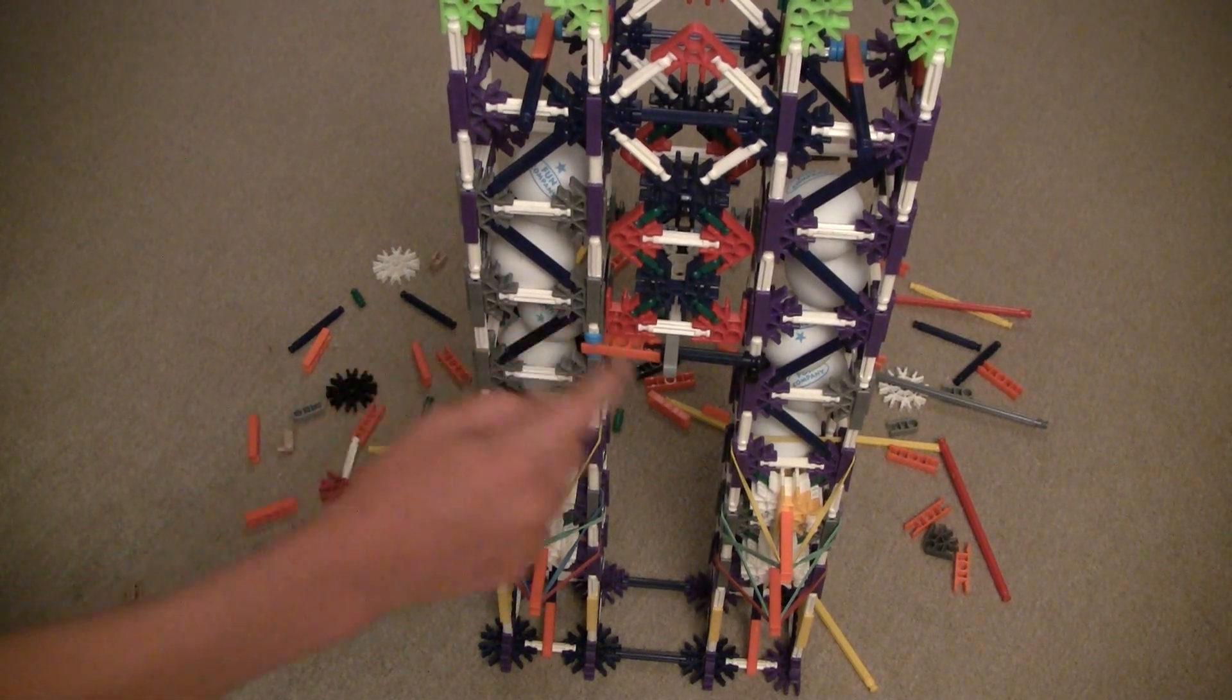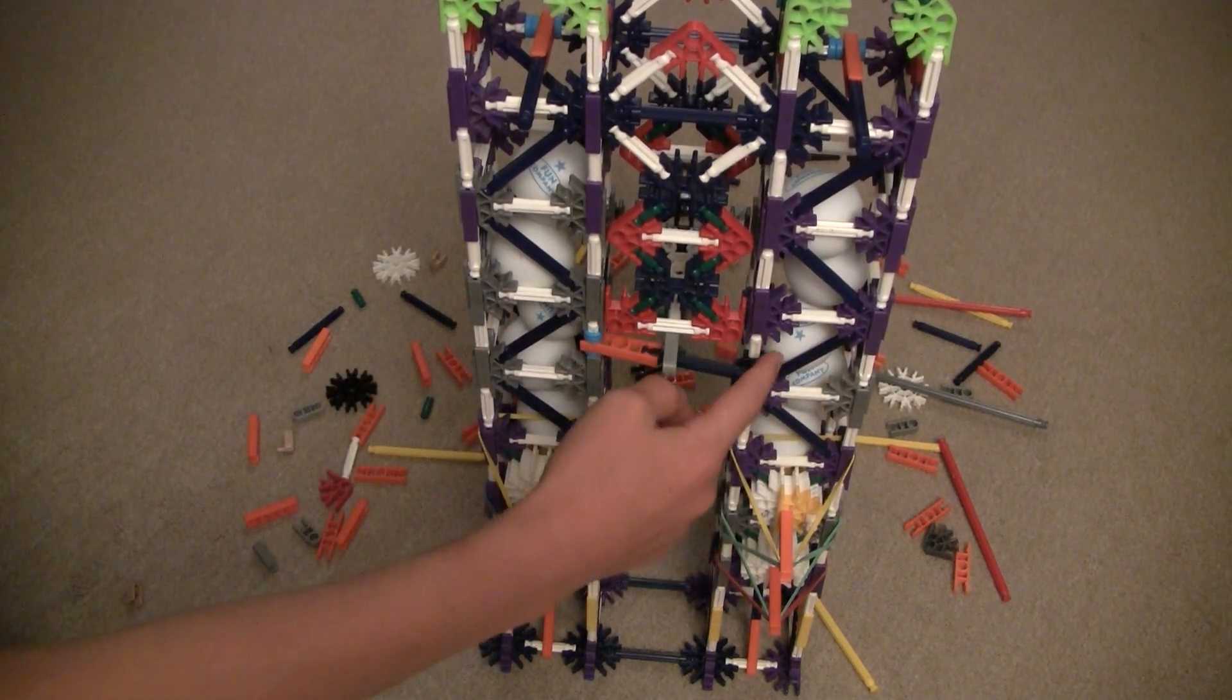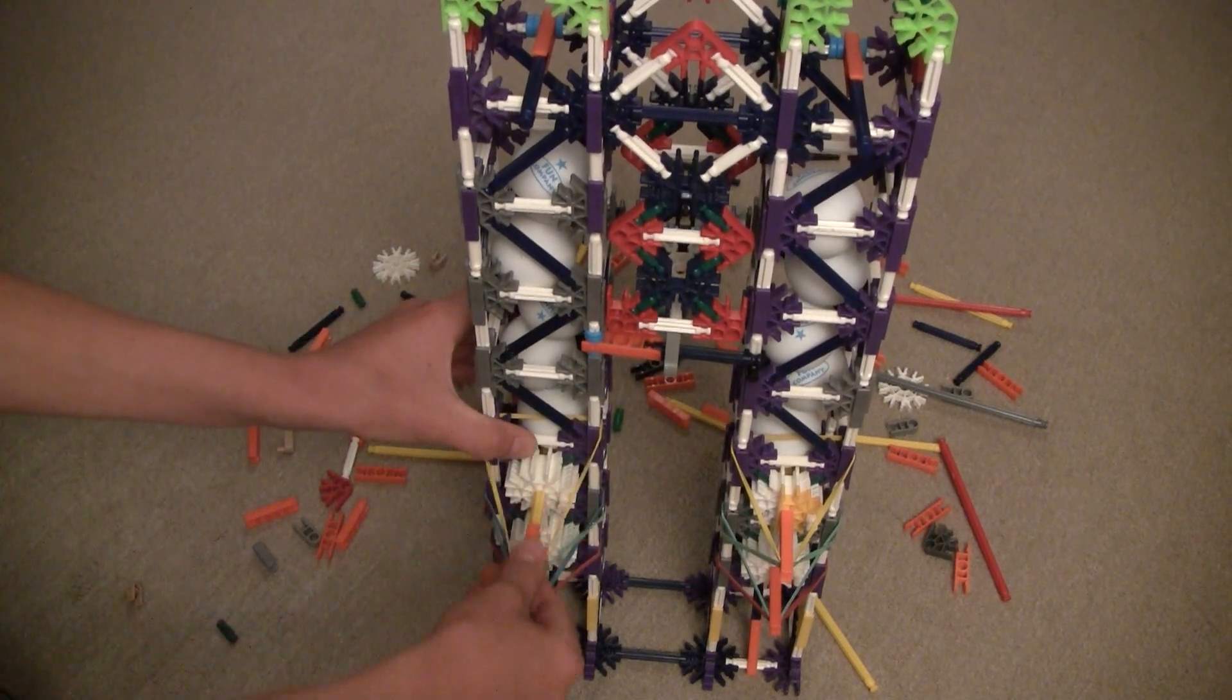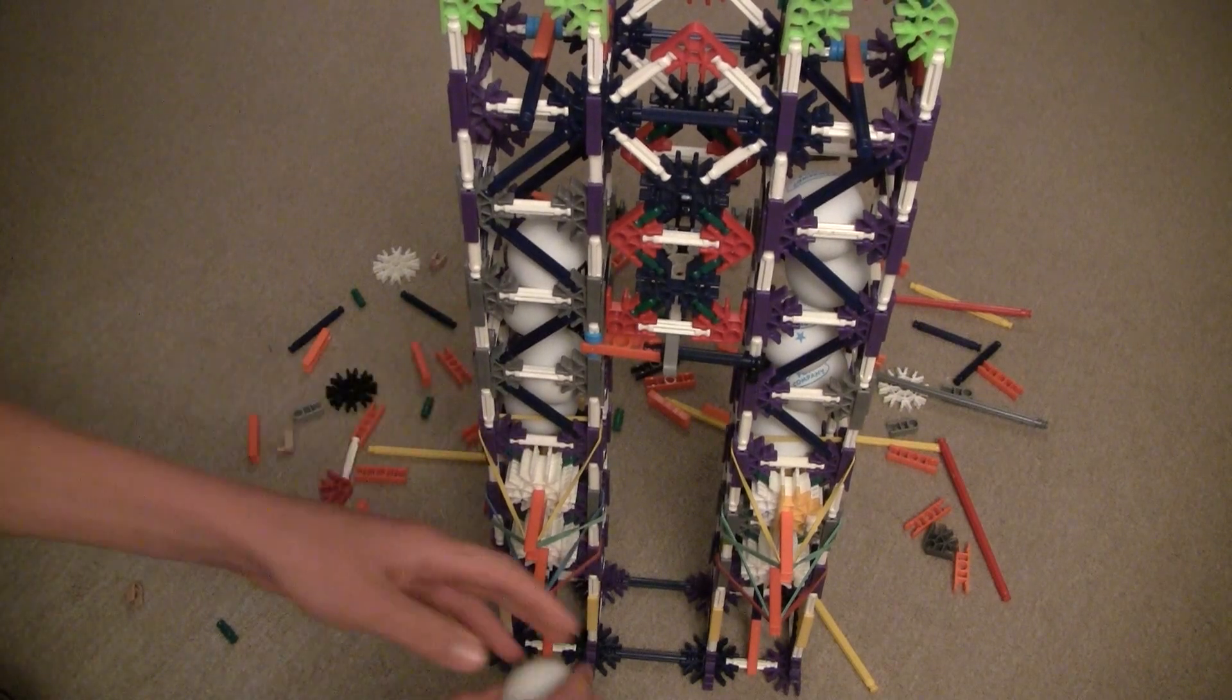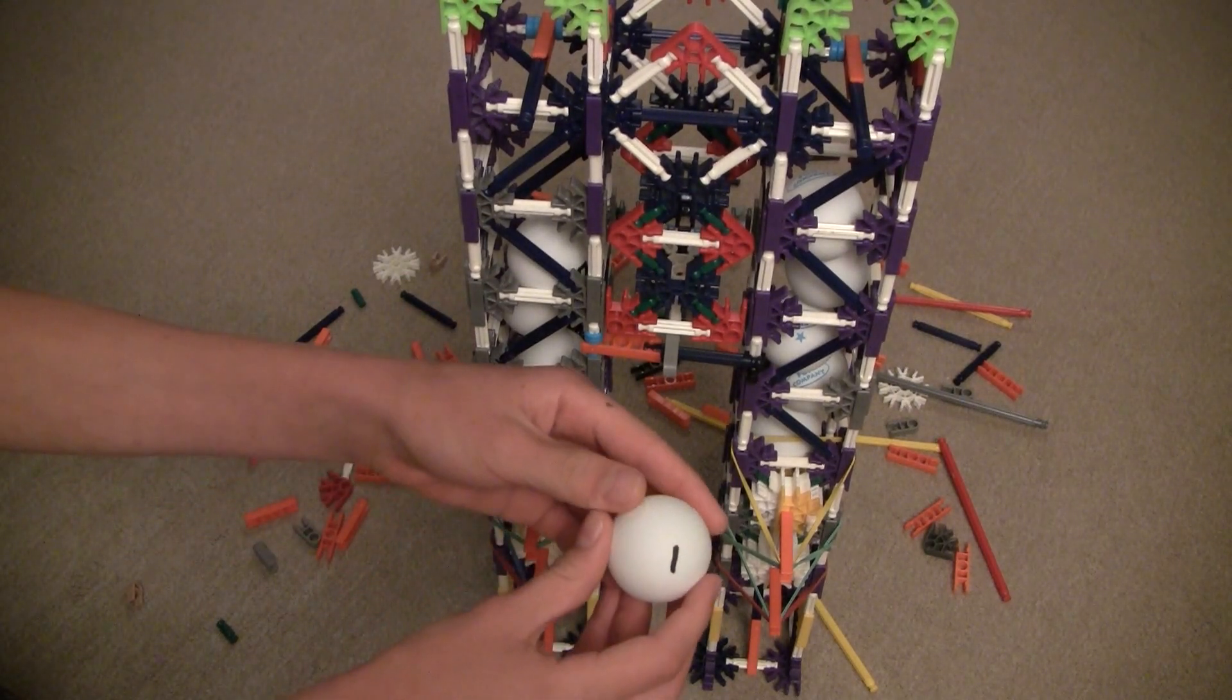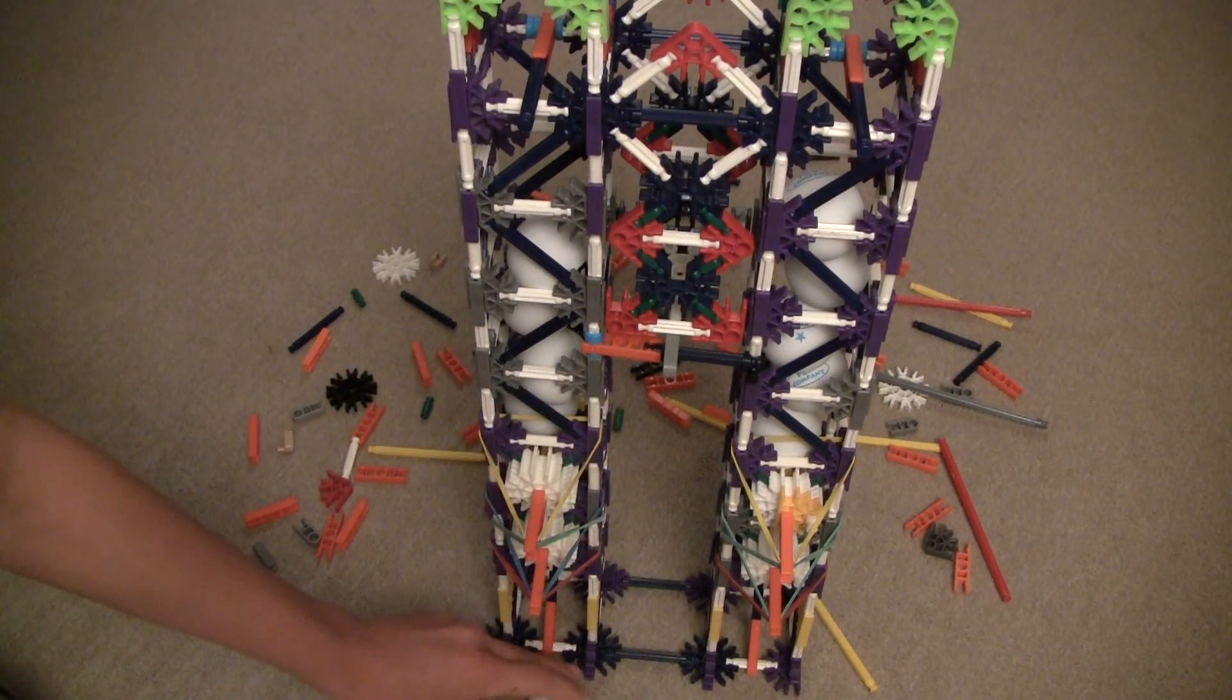This is the ones column, and this is the twos column. So let's say I'm going to do one plus one. I'm leaving the ones column and I'll find the ball that says one.